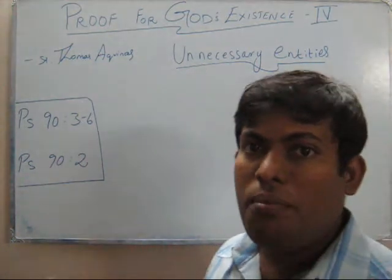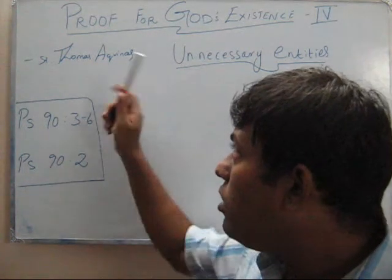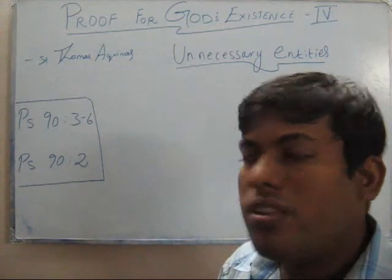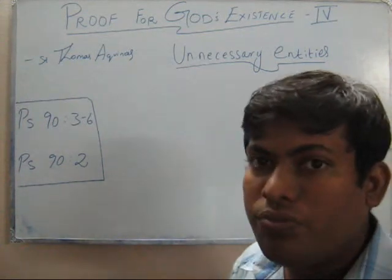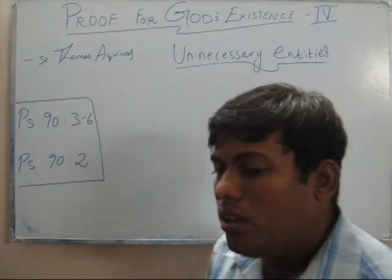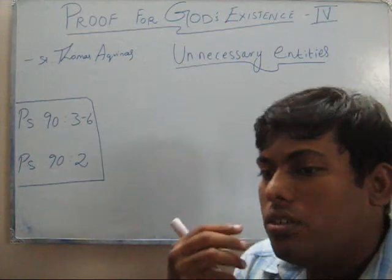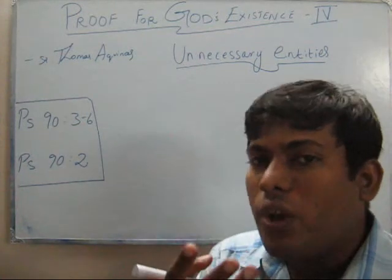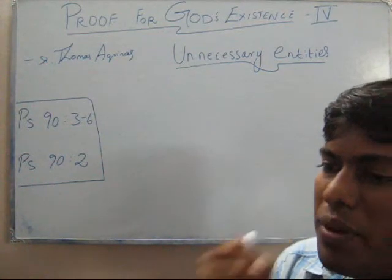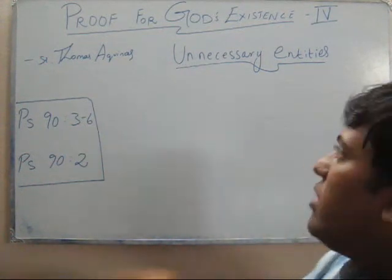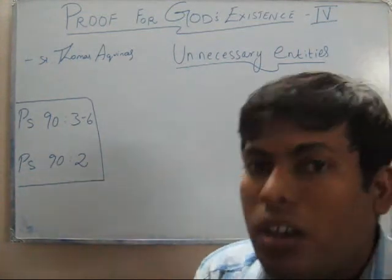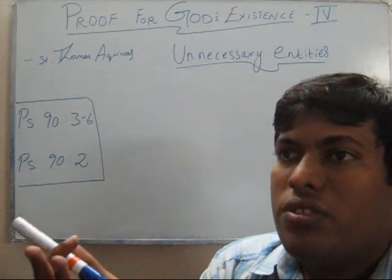This video is about Thomas Aquinas's proof of God's existence — his third proof, fourth in the series. The proof is very appealing in the sense that the presence of unnecessary entities in this world is the proof for God's existence.